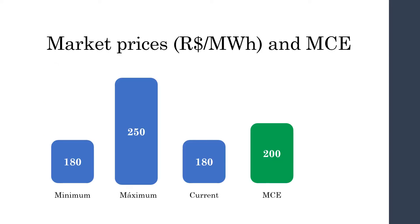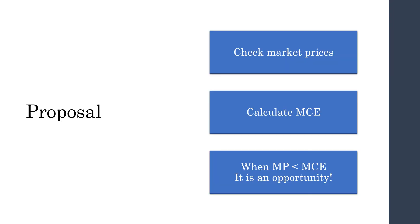How do market power prices compare with the marginal cost of expansion? In the past year we had a minimum of 180 reais per megawatt hour and a maximum of 250. The current power price offered by the market is 180 reais per megawatt hour, and the marginal cost of expansion, according to my calculations, is 200 reais per megawatt hour.